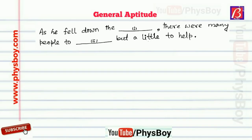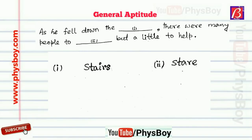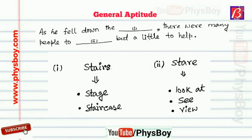The appropriate word pair for this sentence is 'stairs' and 'stare'. Stairs means a stage or staircase, and stare means to look at, see, or view. So the correct word pair is 'stairs' and 'stare': 'As he fell down the stairs, there are many people to stare but little to help.'